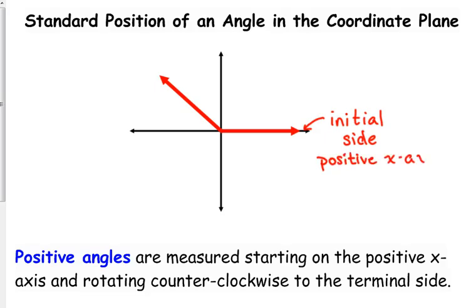We rotate counterclockwise — we go from the positive x-axis to the terminal side counterclockwise, and that gives us the positive angle. Positive angles are measured starting on the positive x-axis and rotating counterclockwise to the terminal side.